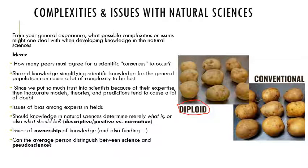Should knowledge in natural sciences determine merely what is, or also what should be? Moving into ethics: describing what is would be a 'positive' or descriptive viewpoint, whereas 'normative' looks at what should be or what is ethical. Should natural science knowledge be used for that, or should we solely be looking at what is happening? There are also issues of ownership of knowledge and funding: who owns the knowledge, should it be open to the public, should people pay for or be paid for expressing this knowledge? And can the average person distinguish between science and pseudoscience?